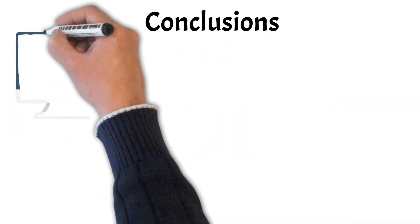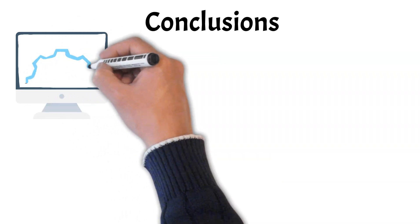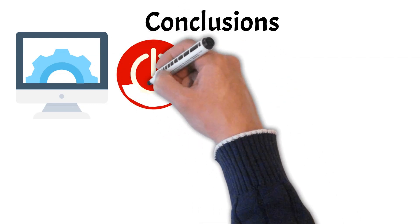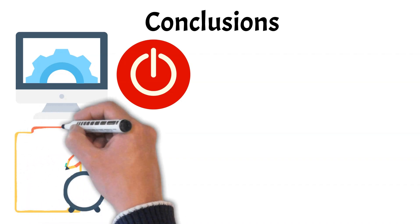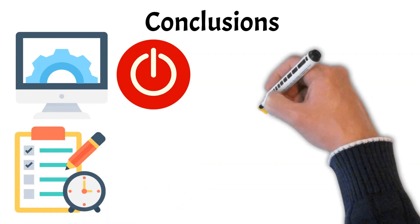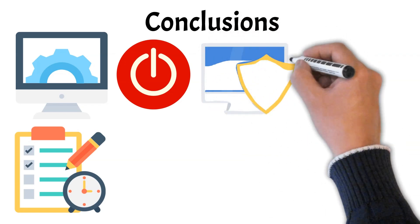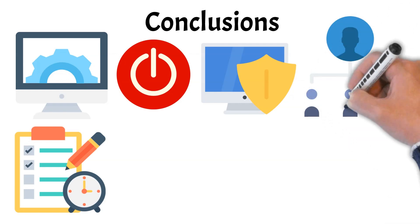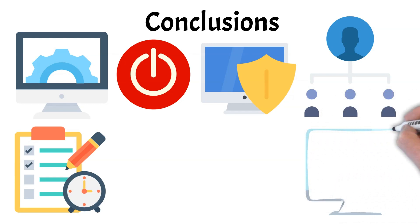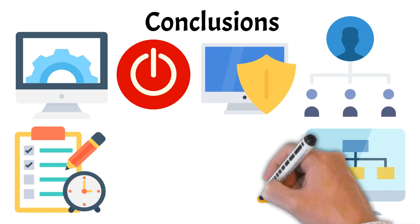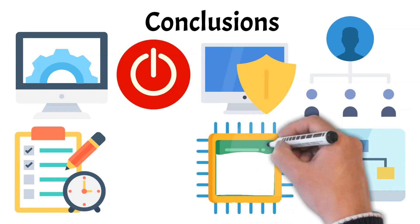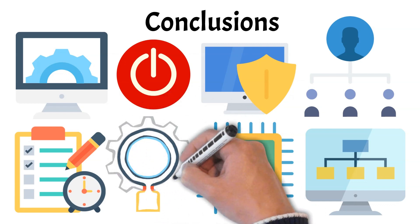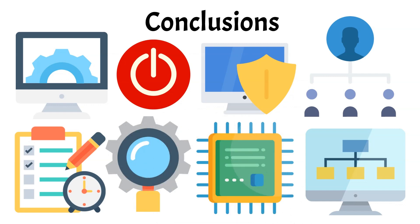In conclusion, operating systems are the unsung heroes of modern computing, coordinating hardware, enabling software, and managing users, files, and memory behind the scenes. From the moment a device powers on to the second you shut it down, the OS is working constantly to keep everything running smoothly. But there's still more beneath the surface. Features like built-in security mechanisms, user privilege levels, and system updates help protect against threats and keep systems stable. And as technology evolves, operating systems now support advanced features like virtualization, allowing one machine to run multiple OS environments at once. In future videos, we'll dive deeper into these areas and uncover how operating systems truly power the digital world around us.